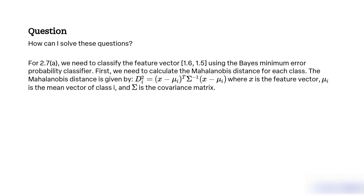First, we need to calculate the Mahalanobis distance for each class. The Mahalanobis distance is given by D_i^2 = (x - μ_i)^T Σ^(-1) (x - μ_i), where x is the feature vector, μ_i is the mean vector of class i, and Σ is the covariance matrix.